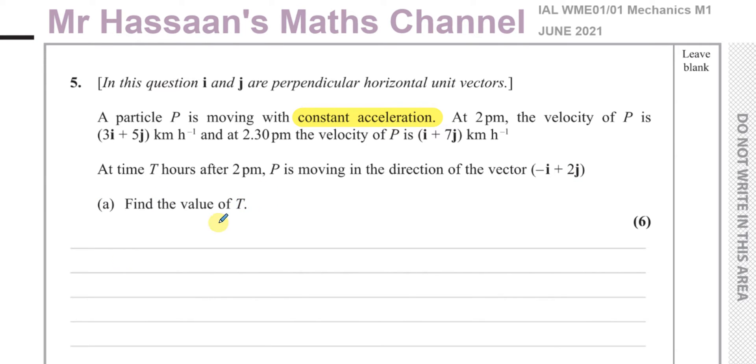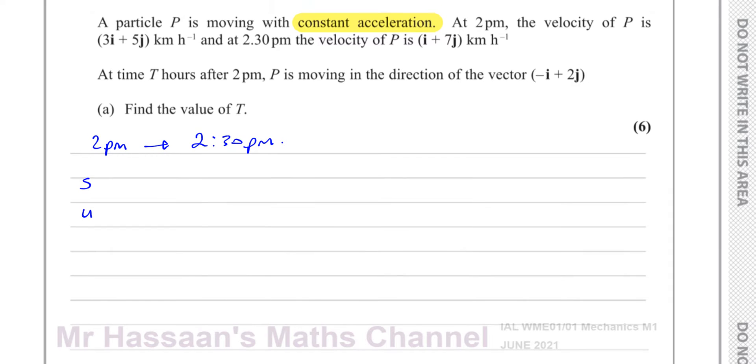Okay, so between 2pm and 2:30pm, we can work out the information we need. I'm going to consider that time frame first, find the acceleration of this particle, and that acceleration will be constant, so we can use it for the second section. As it's constant acceleration, the SUVAT equations will apply.